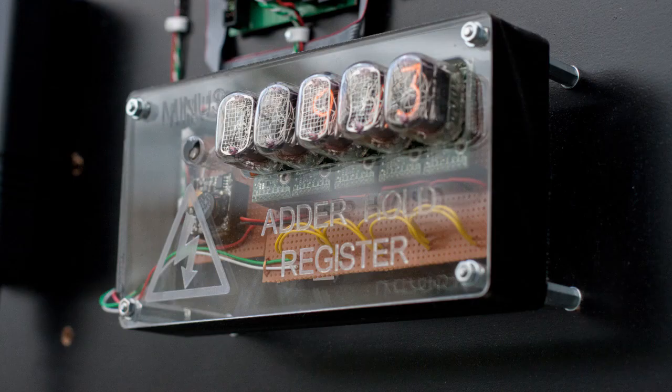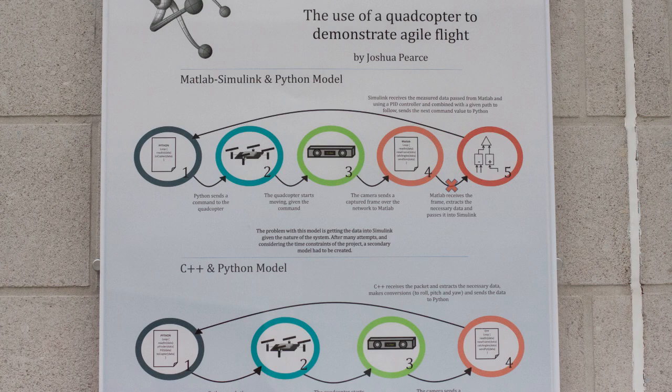Undergraduate projects in computer science can involve maths, physics, electronics, statistics — you can have ones that involve social science, economics. Basically, computer science is everything.